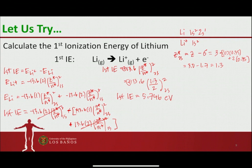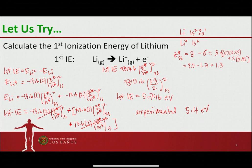The experimental value is actually very close to this — 5.4 eV — suggesting that indeed, in polyelectronic systems, shielding and penetration play a very large role in electronic energy. We can use Slater's rules to approximate the electronic energy for polyelectronic atoms.